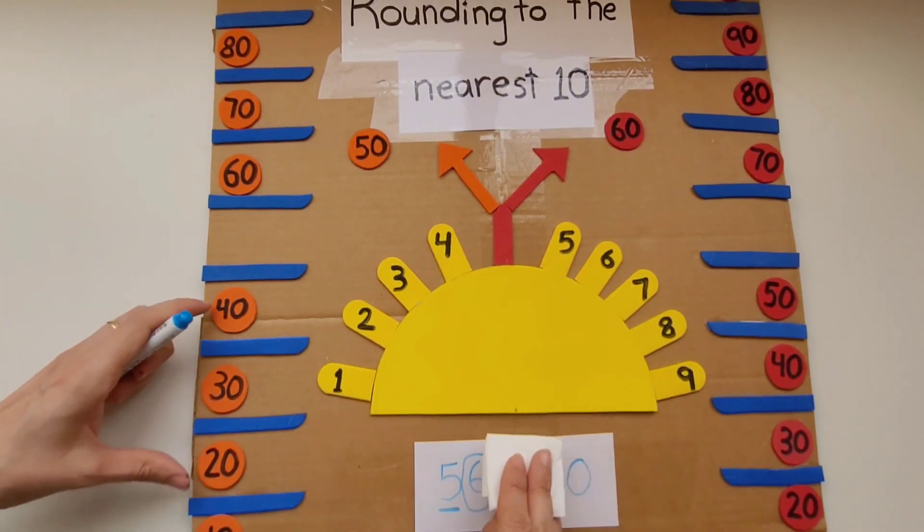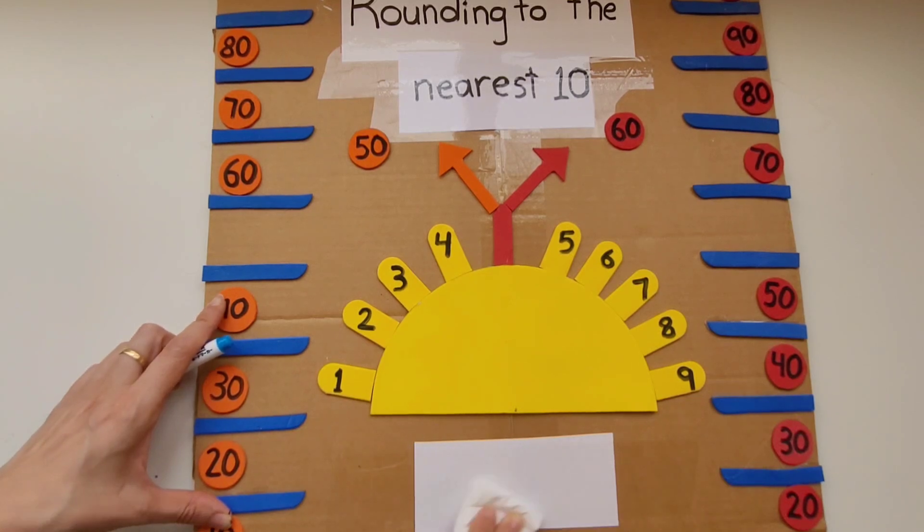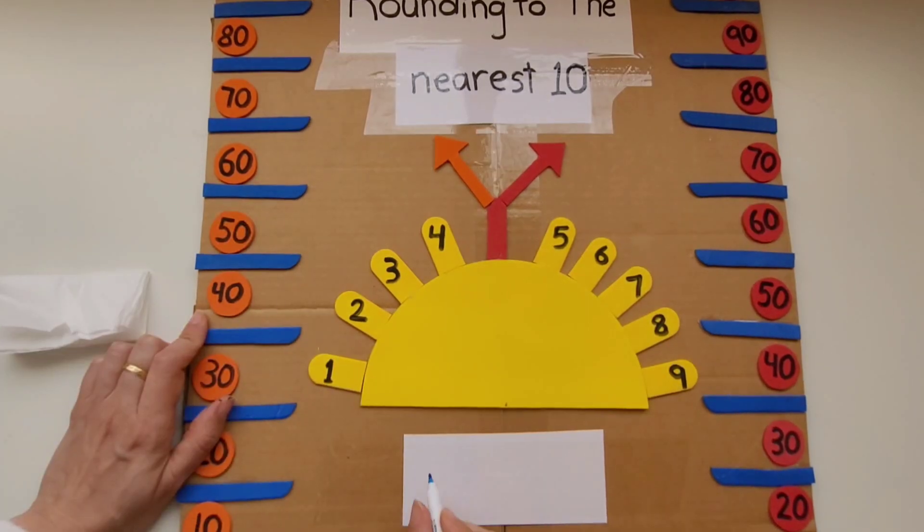Now we can erase the workspace and write a new question. This time we're going to use the number 42.